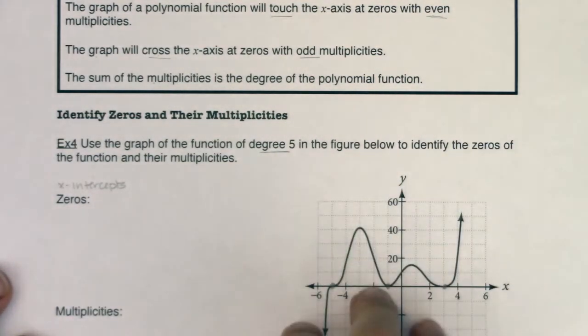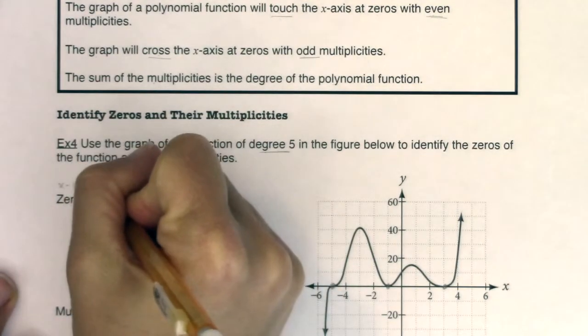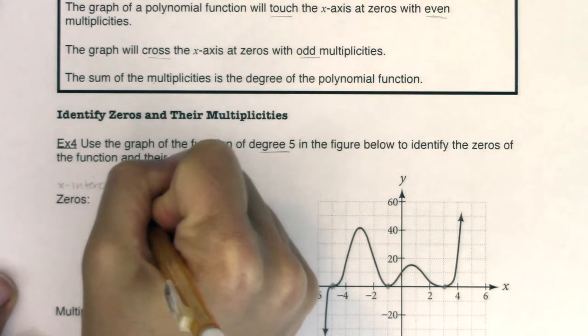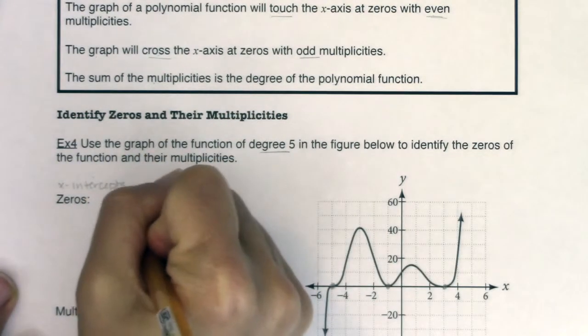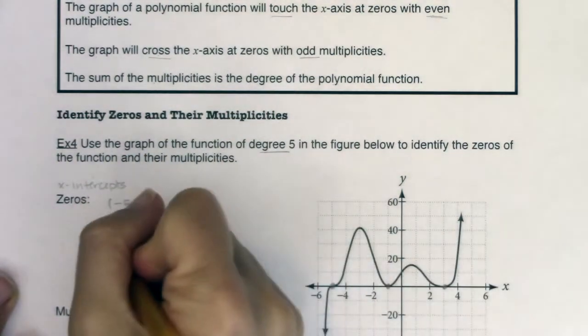So my three zeros appear to be negative 5, 0. It looks like we have one at negative 1, 0. And then that looks to be 3, 0.